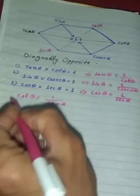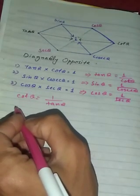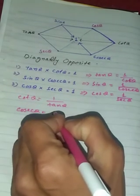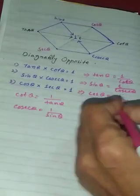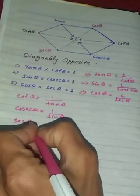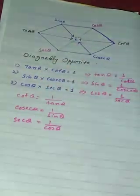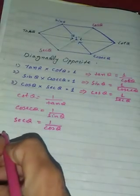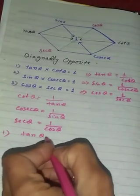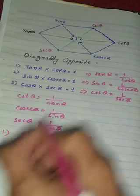So, 1 divided by sine theta is the reciprocal identity for cosecant theta. And 1 divided by cosine theta gives the reciprocal for secant theta.